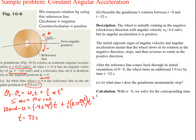Part b asks us to describe the grindstone's rotation between t = 0 and t = 32 seconds. The wheel is initially rotating in the negative (clockwise) direction at 4.6 rad/s. Its angular acceleration is positive, meaning it slows down in the negative direction, momentarily stops, then reverses. After the reference line comes back through its initial orientation of theta = 0, the wheel turns an additional 5 revolutions by t = 32 seconds.